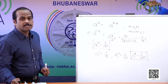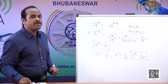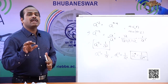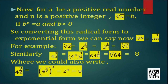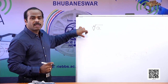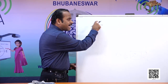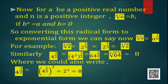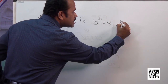Now let us define the nth root. For a positive real number a and a positive integer n, the nth root of a is expressed as a value b such that b to the power n equals a, and b must be greater than zero.